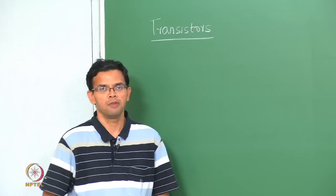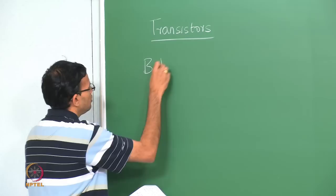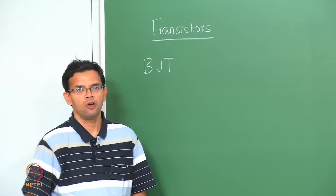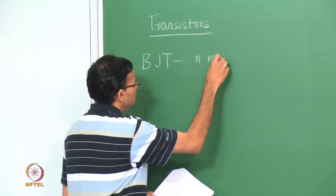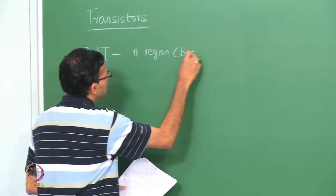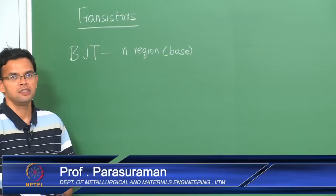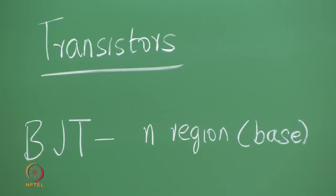We first started by looking at bipolar junction transistors, BJT. In the case of a PNP bipolar junction transistor, we had an N region which was your base, through which the minority carriers — which are your holes — go as they travel from the emitter to the collector.